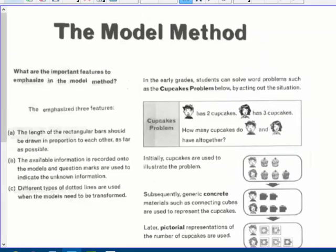So the model method. What are the important features to emphasize in the model method? Well, the important features are the length of the rectangular bars should be drawn in proportion to each other as far as possible. Give it a best shot. The available information is recorded onto the models and question marks are used to indicate, what do I not know? The unknown information. Letter C.